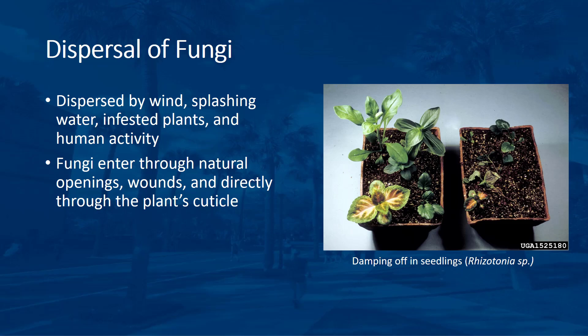Wind often disperses many fungal pathogens. Spores can be carried for miles by wind. Splashing water from rainfall or irrigation will also move fungal spores from plant to plant. Fungi that live in the soil can move from plant to plant by growing along intermingled roots or out from infested plant debris in the soil. Some fungi, such as Rhizoctonia, can survive on their own for long periods of time without a host by living in plant debris or soil. Fungi can also be spread by human activity through movement of already diseased plants or through the use of gardening tools. While fungi may enter a plant through its natural openings or through wounds, they can also penetrate directly through the plant's cuticle.